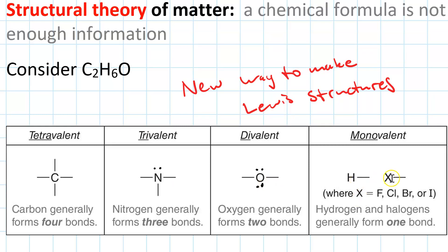Hydrogen and the halogens are monovalent. They generally form only one bond, especially in organic molecules. The halogens have three lone pairs.